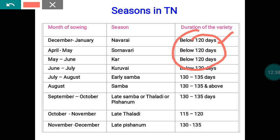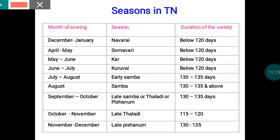During the Kuruvai and Samba seasons, only short-duration varieties can be cultivated. July–August is the early Samba season, and there is also the main Samba, late Samba, and late Pisanam seasons. During Samba and late Pisanam, water availability is more, so we can cultivate varieties with longer duration — more than 130 days. During Navari and Kuruvai, sunlight intensity is high and water is a limiting factor, so short-duration varieties of less than 120 days are preferred.